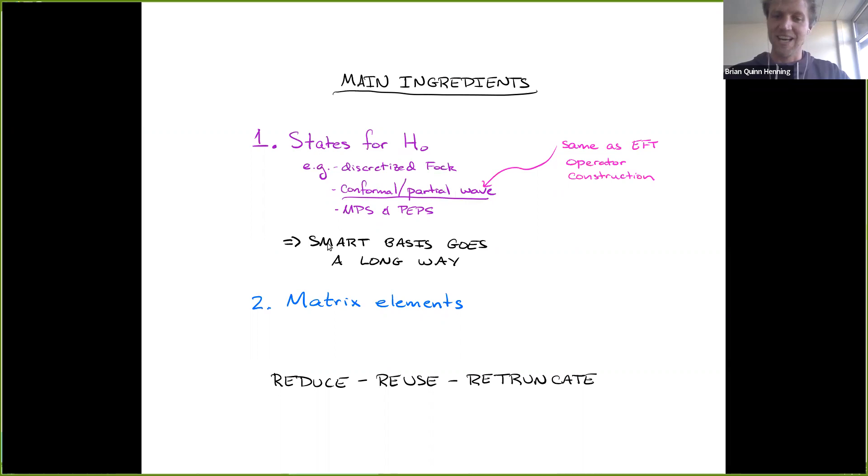So a smart basis goes a long way. It would have been nice if I had actually put a plot here, but you can compare this discretized Fock space to this conformal space. For having a truncation parameter that's a 10th of the size, you can get the same accuracy by using this conformal basis. You've actually increased exponentially because basis size grows exponentially in this game. So you can get exponential improvement by picking the right basis. And this is really easy to see. If you miraculously picked the ground state, you win the game. You only need one state. So this is what Laughlin did.